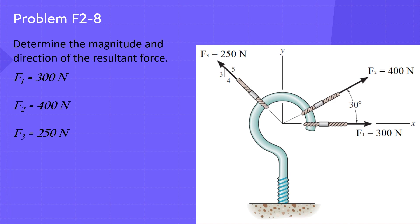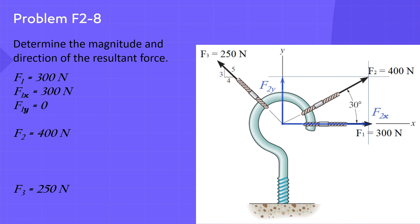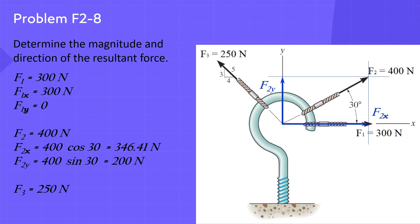Now resolve these forces. F1 is in the positive x direction, so it does not have a y component. Consequently, F1x equals 300 newtons and F1y equals 0. For F2, it has two components, F2x and F2y, both in positive directions. Where F2x equals F2 cosine 30 equals 400 cosine 30 equals 346.41 newtons, and F2y equals F2 sine 30 equals 200 newtons.